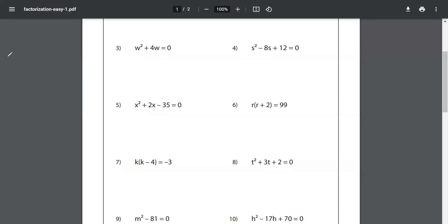My question number six tells me r(r + 2) is equal to zero. Wait, r(r + 2) is equal to 99, it is not zero, it is 99.